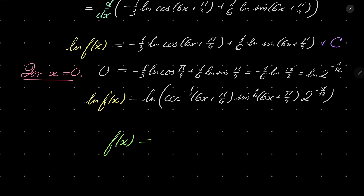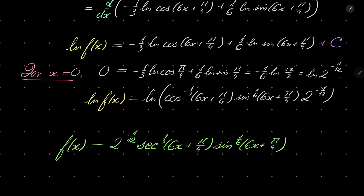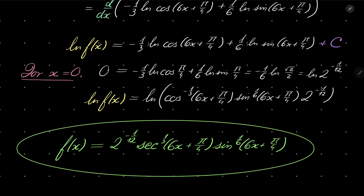Using logarithm identities, we can combine everything and remove the logs to get the final result: f(x) = 2^(−1/12) · sec^(1/3)(6x + π/4) · sin^(1/6)(6x + π/4). This function is perfectly valid in some interval around 0. Very similarly, you can also find explicit formulas for g and h, but I leave that to you. Thank you for watching and I'll see you next time. Goodbye.